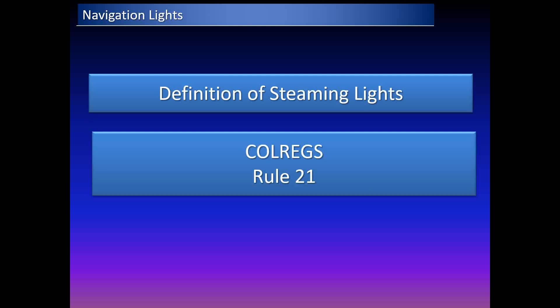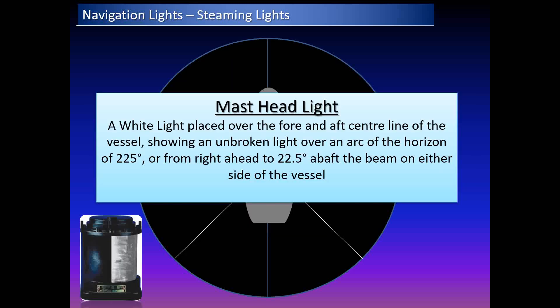Based on the collision regulations, the definitions of navigation lights come from Rule 21. The first definition is the masthead light: a white light placed over the fore-and-aft centerline of the vessel, showing an unbroken light over an arc of the horizon of 225 degrees — from right ahead to 22.5 degrees abaft the beam on either side of the vessel.